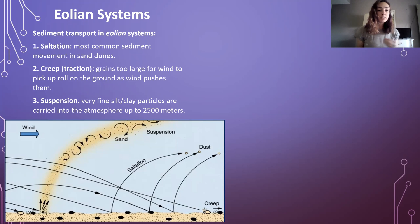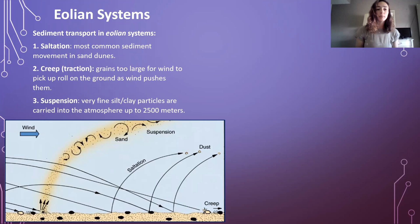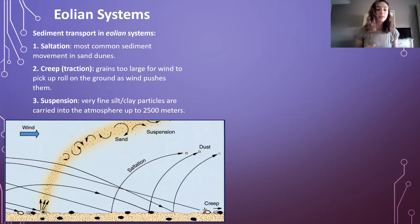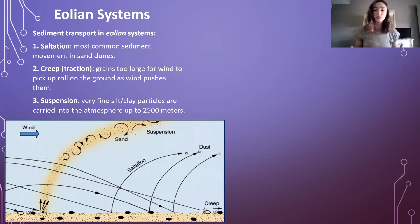For example, we have saltation, which is the bouncing along of sediment grains, and this is the most common type of sediment movement in sand dunes. Additionally, we have creep or traction, where grains are too large for wind to pick them up completely, or even to bounce them along, so it rolls them along the ground instead. And then we have suspension, which is the complete picking up of very fine grains, like silt and clay particles, and carrying them through the atmosphere up to 2,500 meters. That covers the basic types of sediment movement through aeolian systems.